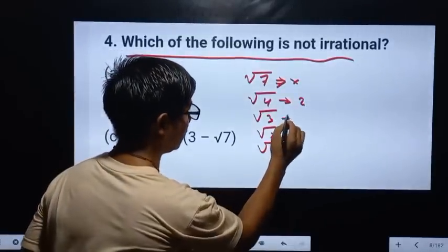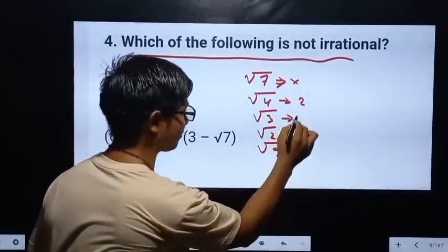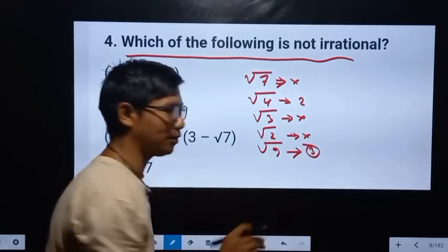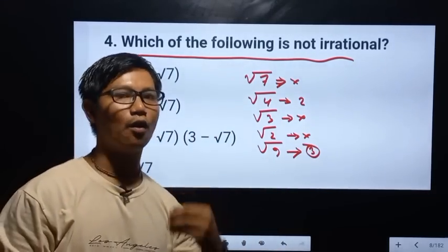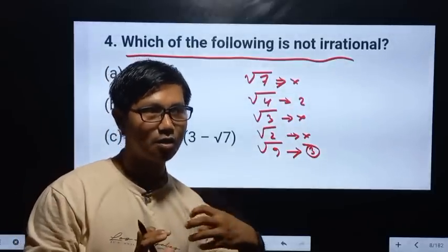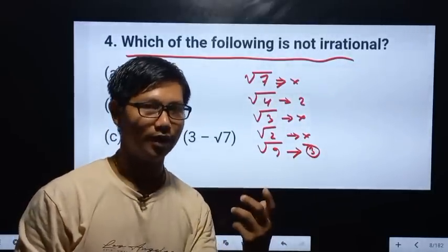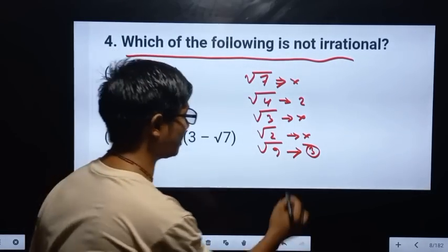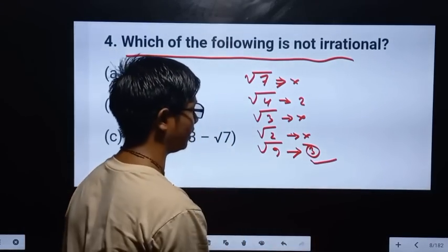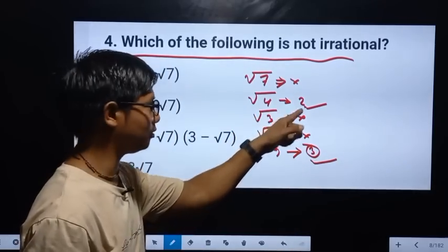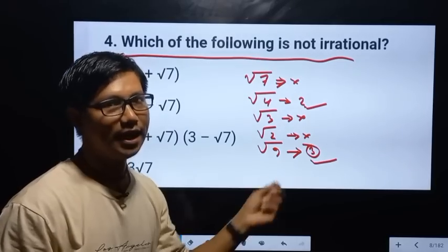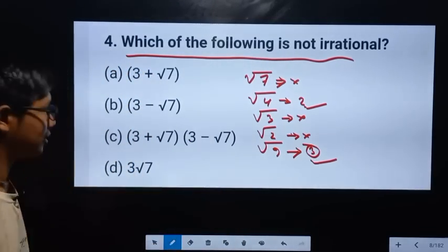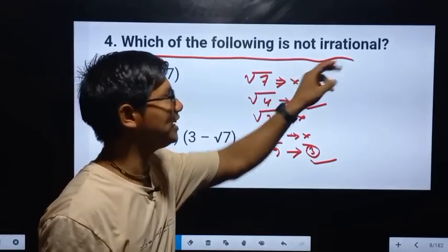The following is not irrational. You can say that you have a very small one — the other thing is also a small one. Now, we can say this is not irrational.